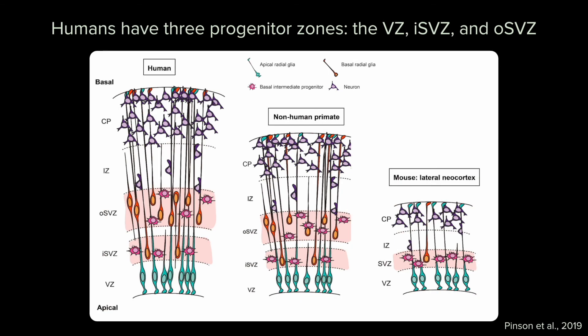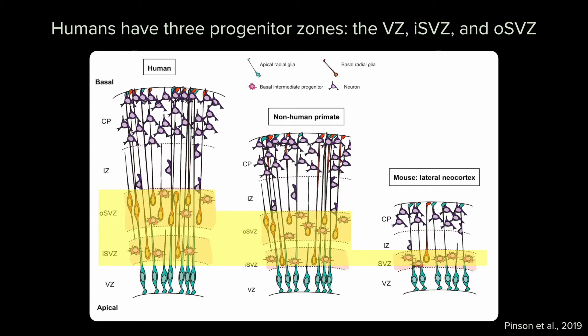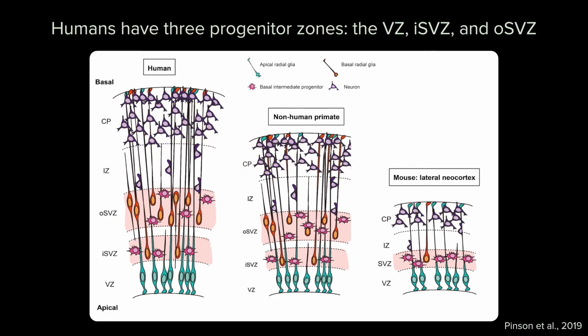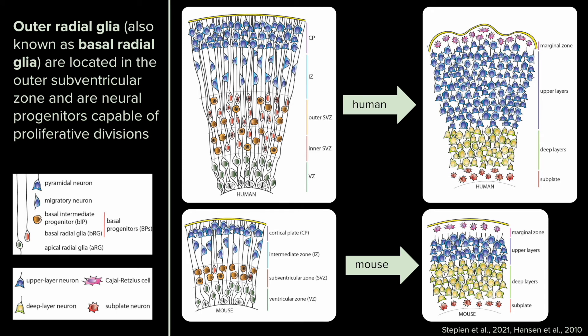Even more important to proliferative capacity is the human-specific existence of three progenitor zones. The developing neocortex is typically divided into the ventricular zone, the subventricular zone, the intermediate zone, and the cortical plate, which is flanked by the subplate and marginal zone. Early in neurogenesis, the two progenitor zones are the ventricular zone and the subventricular zone, with relative thickness being similar across species. As neurogenesis proceeds, however, the subventricular zones in humans and primates grow in radial thickness and split into an inner and outer subventricular zone, endowing these species with three progenitor zones in total.